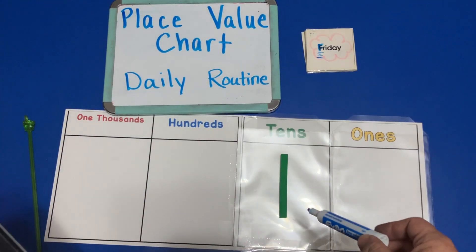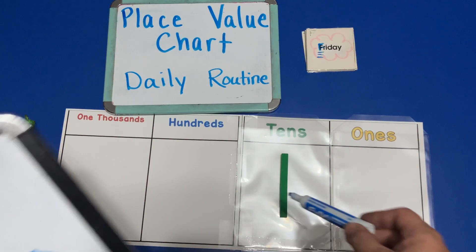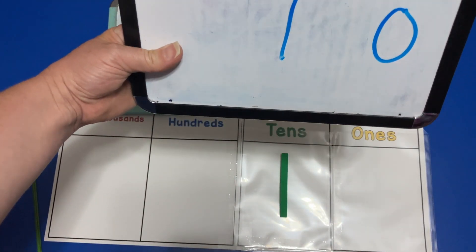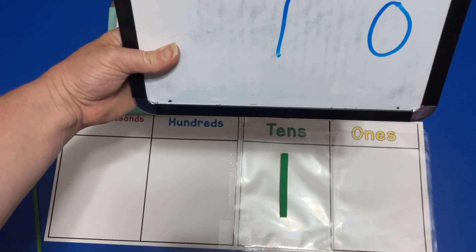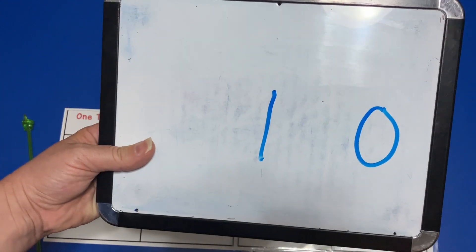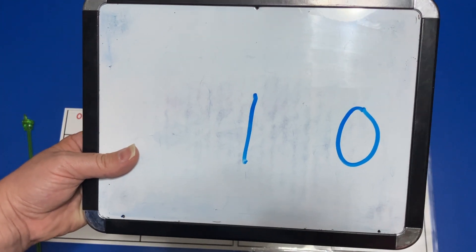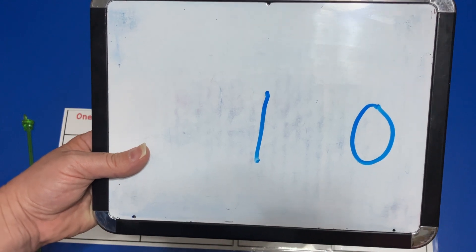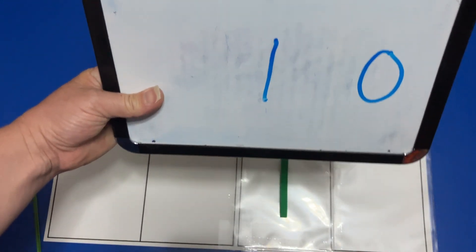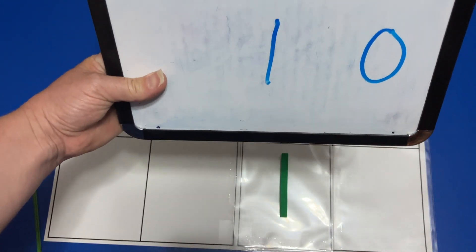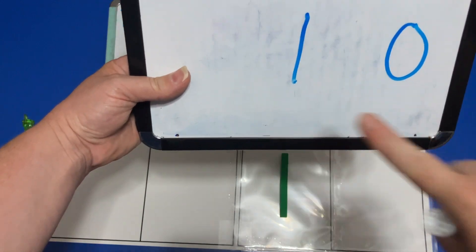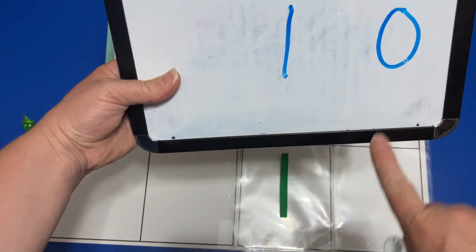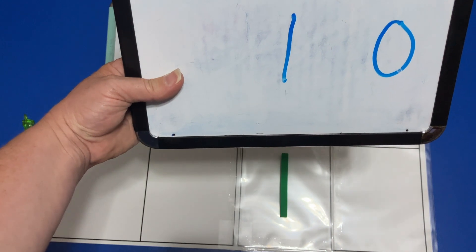That makes the number ten. One group of ten and zero ones makes the number ten. So now on Friday we have ten in our place value chart. The value of what we have here is ten, and we write that with one ten and zero ones to get the number ten.